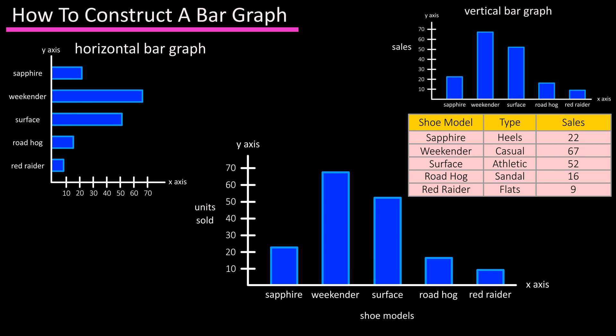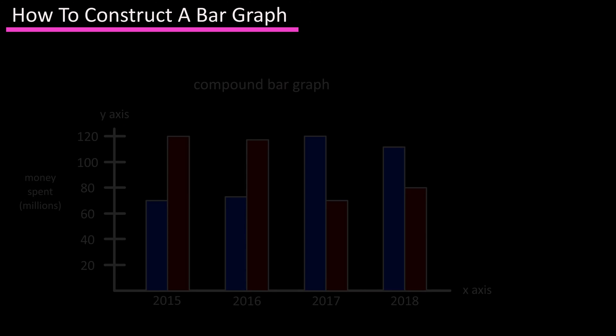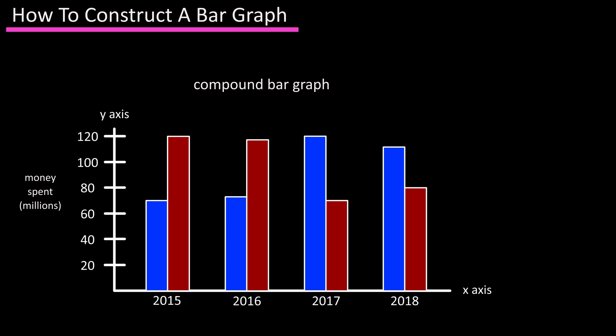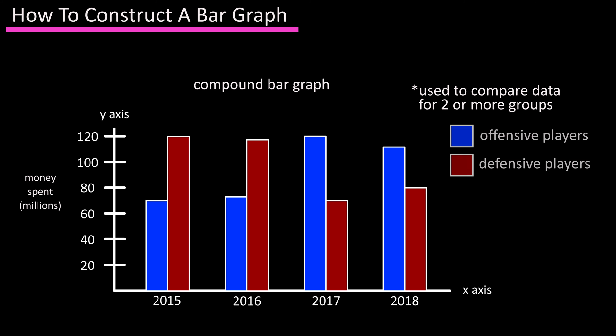Another bar graph often used in statistics is a compound bar graph. A compound bar graph is used to compare data for two or more groups. This bar graph shows over a four-year span the salaries a pro football team spent on defensive players and offensive players.